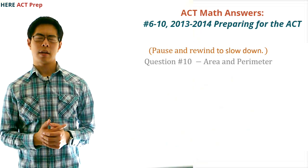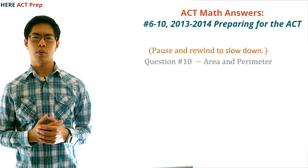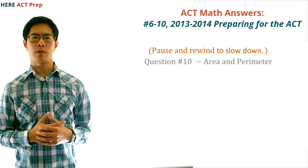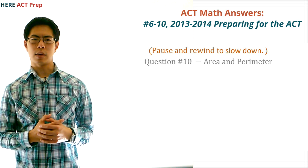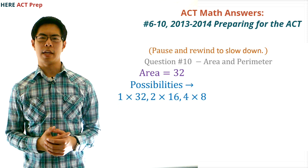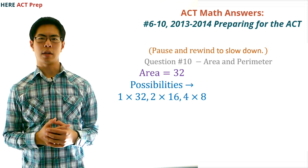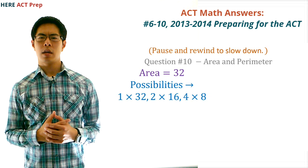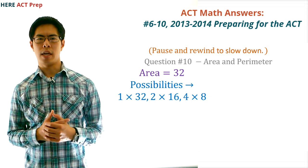Question number 10. The concept this question tests is area and perimeter. Now for this question, we could set up a system of equations and solve for the length and width, but there's a faster and easier way to do this question. First, we use the area to figure out the different possible combinations of length and width. Since area equals length times width, and since we are given that the area is 32, we could have 32 times 1, 2 times 16, or 8 times 4.